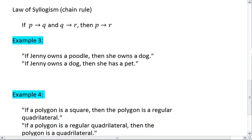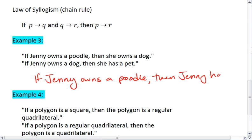We have, if Jenny owns a poodle, then she owns a dog. If Jenny owns a dog, then she has a pet. We can follow this chain of conditional statements and reason that if Jenny owns a poodle, this means that she owns a dog, and if she owns a dog, then she has a pet. So then Jenny has a pet.